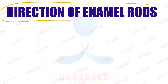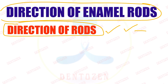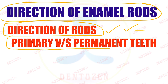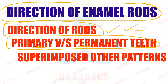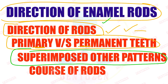We are going to understand the direction of enamel rods by dividing it into simpler parts. First, where do they start and end and at what angles. Second, is there any difference in the direction of enamel rods in primary teeth versus permanent teeth. Third, are there any other hidden superimposed patterns, and what term is used to describe the overall course of enamel rods.